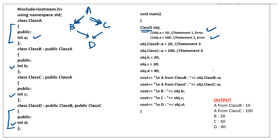An error may occur in statements like obj.a = 10 or obj.a = 100, as these may create an error. To remove this ambiguity, we can use the scope resolution operator: obj.B::a = 10 specifies that the value 10 is inherited from class B, and obj.C::a = 100 specifies that the value 100 is inherited from class C. This removes the confusion for the compiler by clearly specifying which base class the member is inherited from.